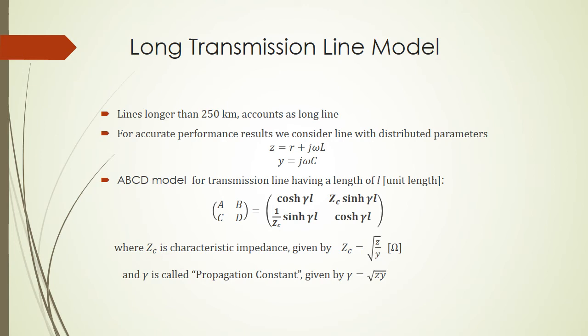Here Zc is the characteristic impedance of the transmission line and is given by Zc equals square root of Z over Y. This has a unit of ohms because it is impedance. And then gamma is called propagation constant, given by gamma equals square root of Z times Y.